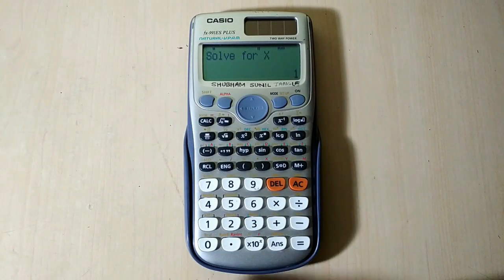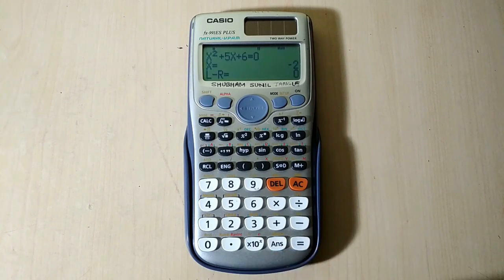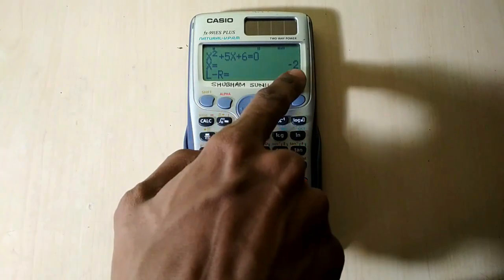When I press shift solve and press the equal button, the calculator gives me an answer. It has given me the answer as minus 2.